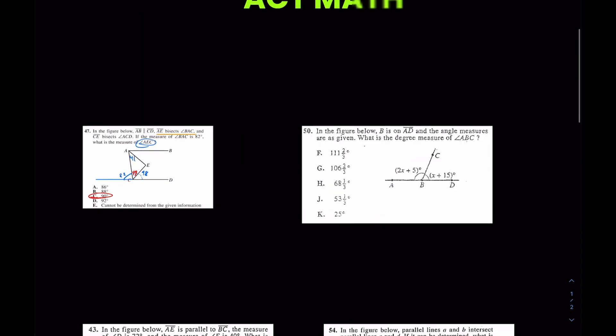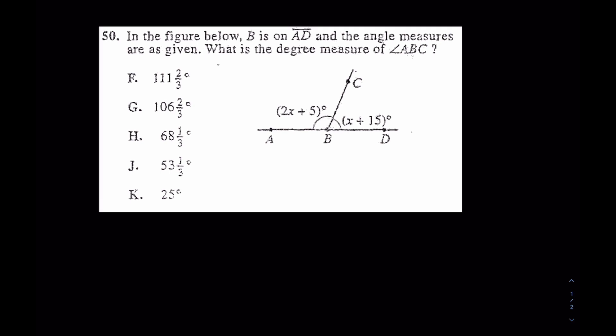Come over here for this one. This is number 50. I think this question is a lot easier. What I see here is that it's asking for measure of angle ABC. It's giving me all these X's here. It probably is urging me or pushing me to go towards finding what X is. Let's do it.